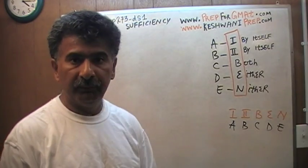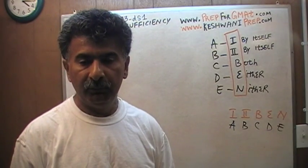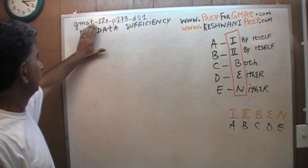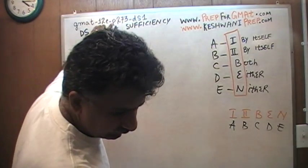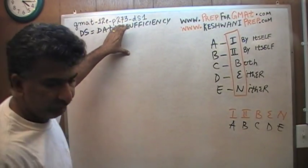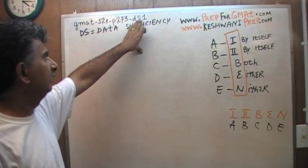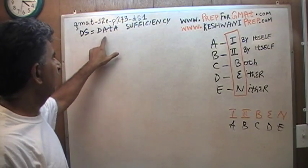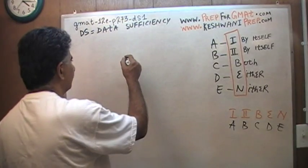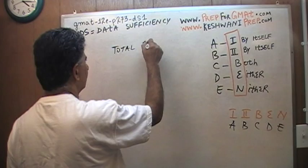Look out for the videos I am going to put out for the data sufficiency questions. The tag I am going to use is GMAT-12E, because this is the 12th edition. Then the page number — page 273 is where I am. If you turn to page 273, you are going to find the data sufficiency questions; that is where they begin. DS stands for data sufficiency, number 1. And there are altogether 174 of them.